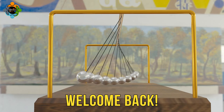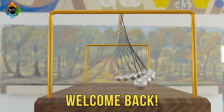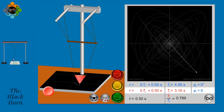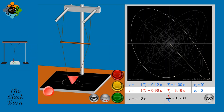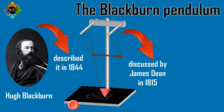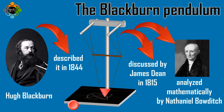Hello and welcome back to another episode of Physics Partner. Today we will be diving deep into the fascinating world of the Blackburn pendulum. The Blackburn pendulum is a device for illustrating simple harmonic motion, named after Hugh Blackburn who described it in 1844. It was first discussed by James Dean in 1815 and analyzed mathematically by Nathaniel Bowridge in the same year.